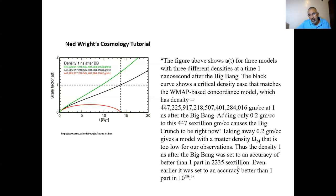If we go even earlier, where we are less confident in the estimates, it's set to an accuracy of better than one part in 10 to the 59. We've already seen these figures, but the estimates we are very confident about give one part in 2,235.6 trillion — an amazing level of fine-tuning at the origin of the universe.